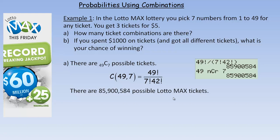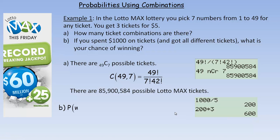Question B says if you spend $1,000 on tickets and got all different tickets, what's your chance of winning? For $5 you get 3 tickets. So if we take $1,000 and divide it by 5, that's 200 groups of tickets, and each group gives you 3. So 200 times 3 is 600 — for $1,000 you would get 600 tickets. So your chance of winning would be 600 out of 85,900,584.